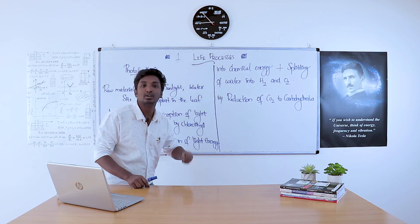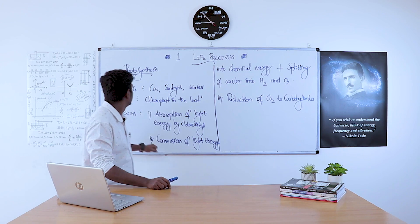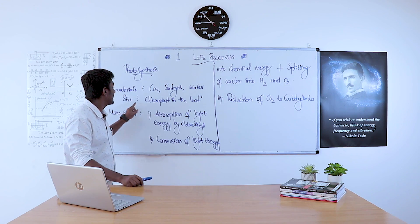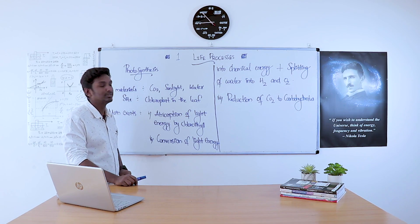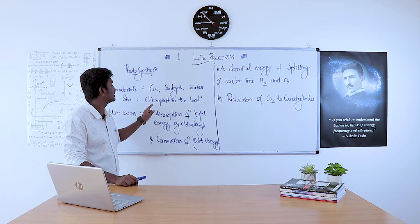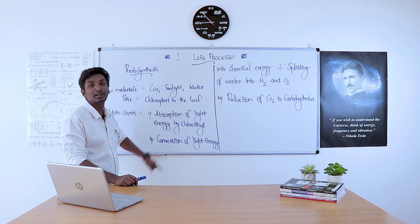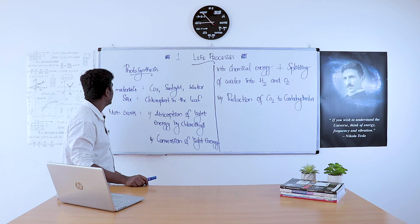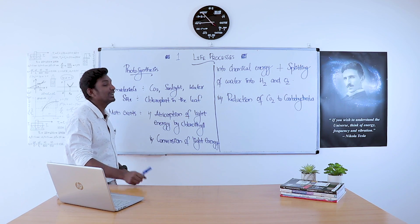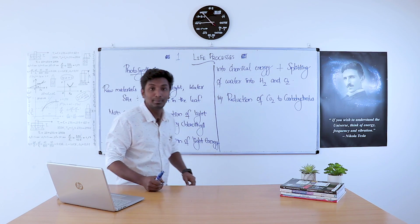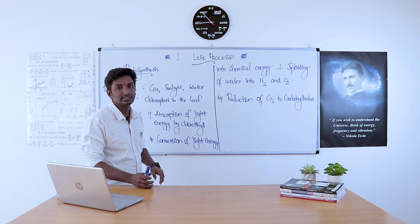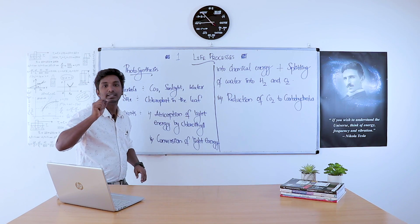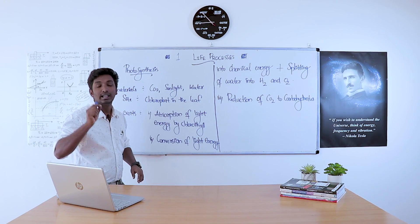Water and minerals are absorbed by the root. The site of photosynthesis is the chloroplast in the leaf.